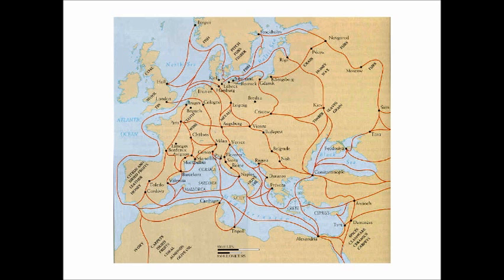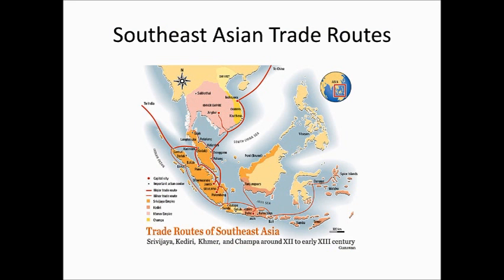The river trade routes of Europe are incredibly complex and confusing. Southeast Asian trade routes are mainly from China into Vietnam and the Philippines and all those areas, which are a bunch of islands below the South China Sea.